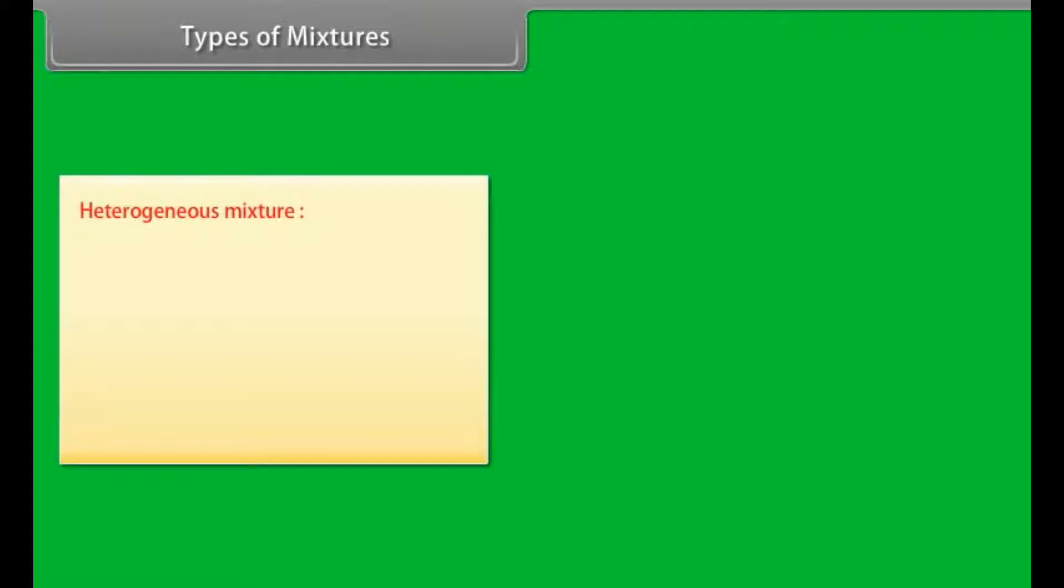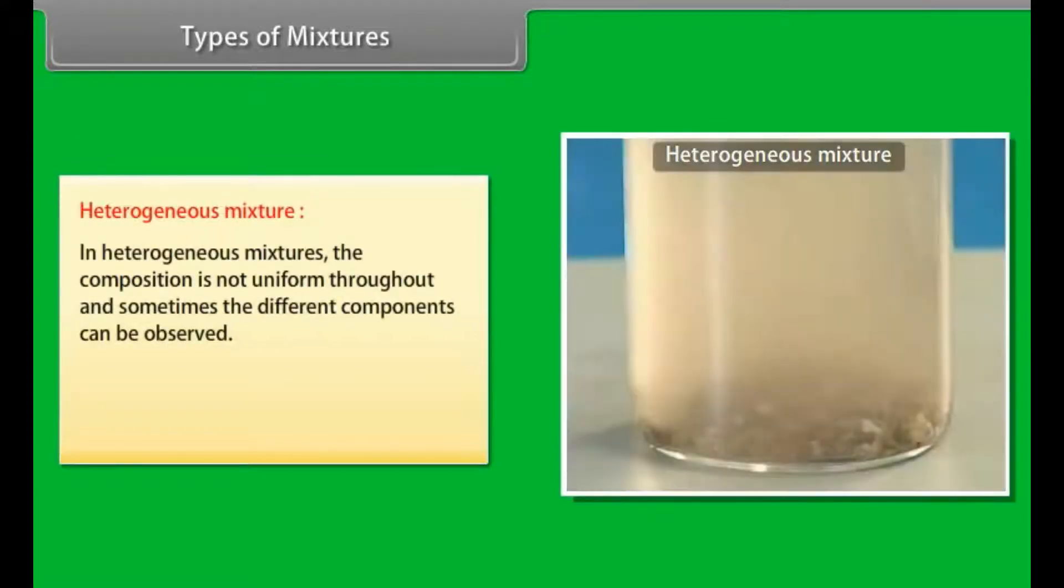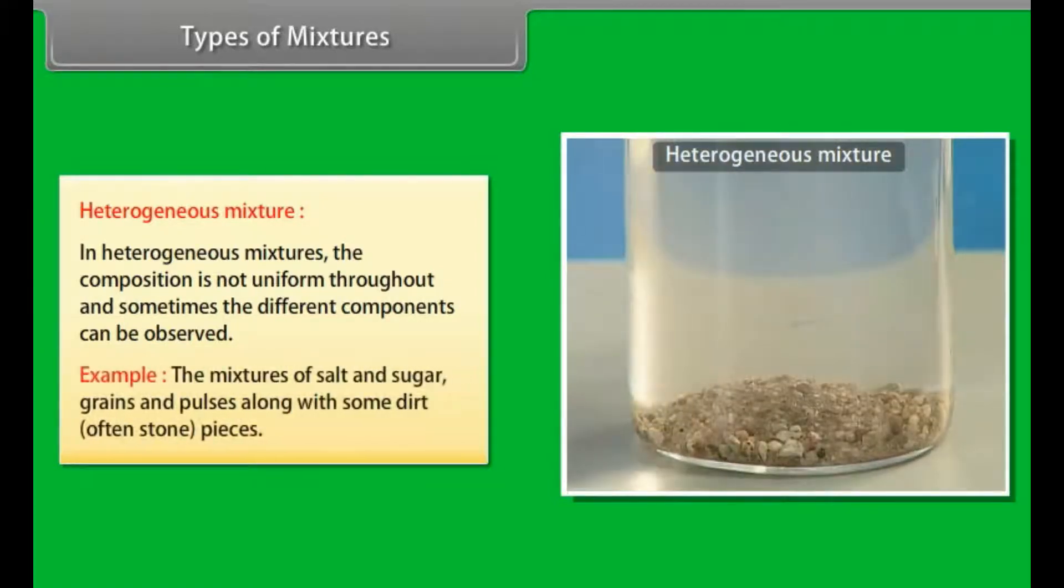Heterogeneous Mixture: In heterogeneous mixtures, the composition is not uniform throughout and sometimes the different components can be observed. Examples: the mixtures of salt and sugar, grains and pulses along with some dirt, often stone pieces.